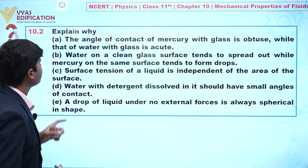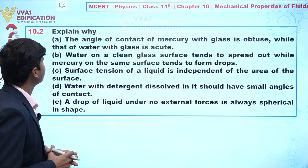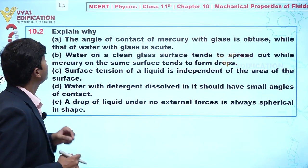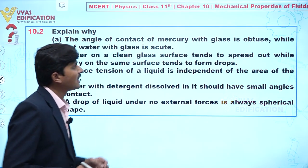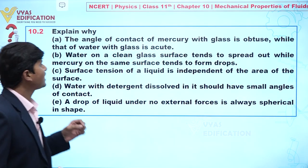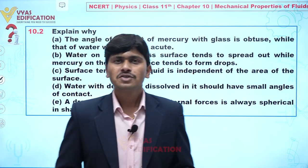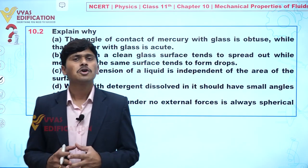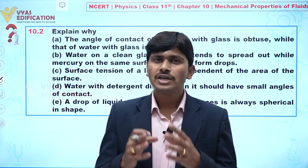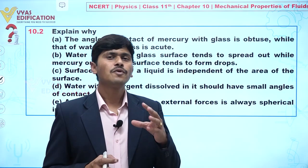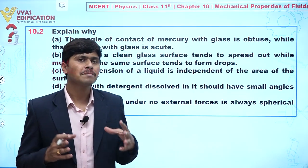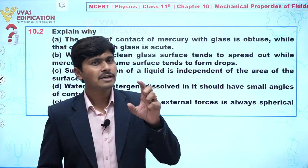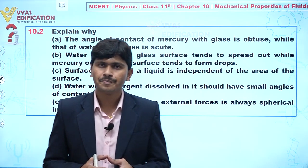In part A, we have to explain why the angle of contact of mercury with glass is obtuse, while that of water with glass is acute. Now, you have definitely heard about two terms: cohesive force and adhesive force. Cohesive force is the force acting between the same type of molecules, and adhesive force is the force acting between two different types of molecules.